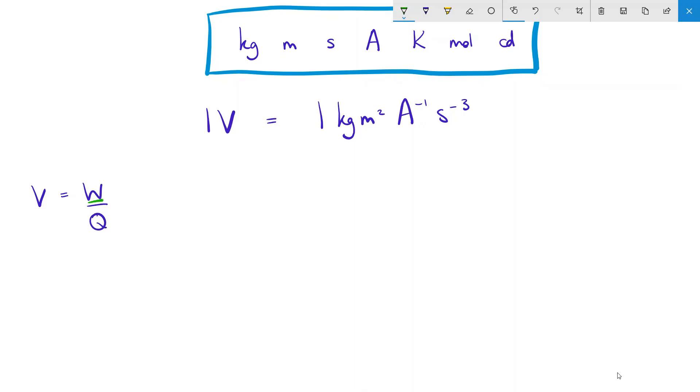But work done is measured in joules, and charge is measured in coulombs, and neither of those are on our list. So we substitute formulae for both.